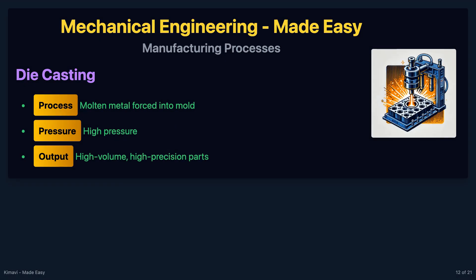Die casting involves forcing molten metal into a mold cavity under high pressure. This process is used for producing high-volume, high-precision parts.